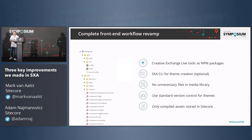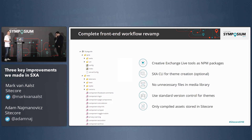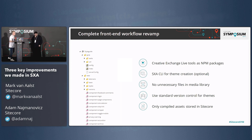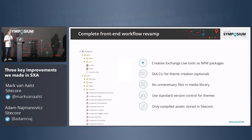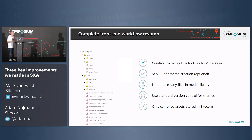What we did to revamp the whole frontend developer workflow is we moved all the Creative Exchange Live tooling from the media library essentially to NPM packages. Meaning we now have an SXA CLI — a command line interface — just like you would have if you worked with JSS, which allows you to create a new theme. It will set up the theme locally on your disk, and download all the base themes you might need — things for theming, maps, search, and stuff like that — all to your local folder. You can start working with all your files using your own tools, your own minifier, whatever works.